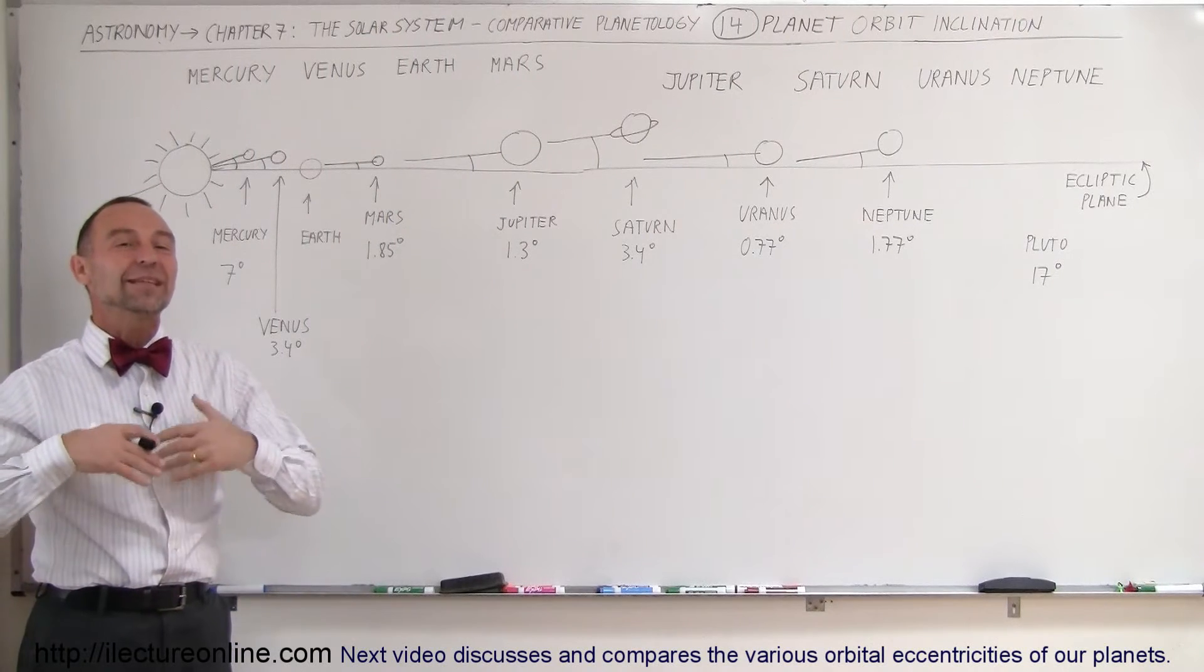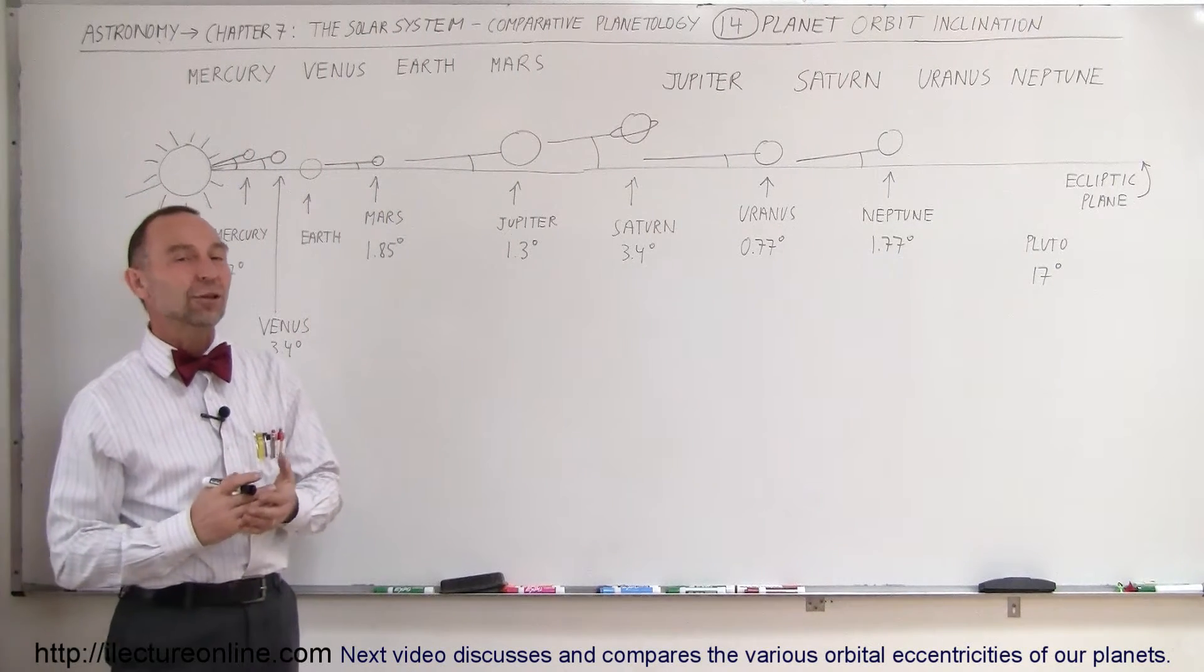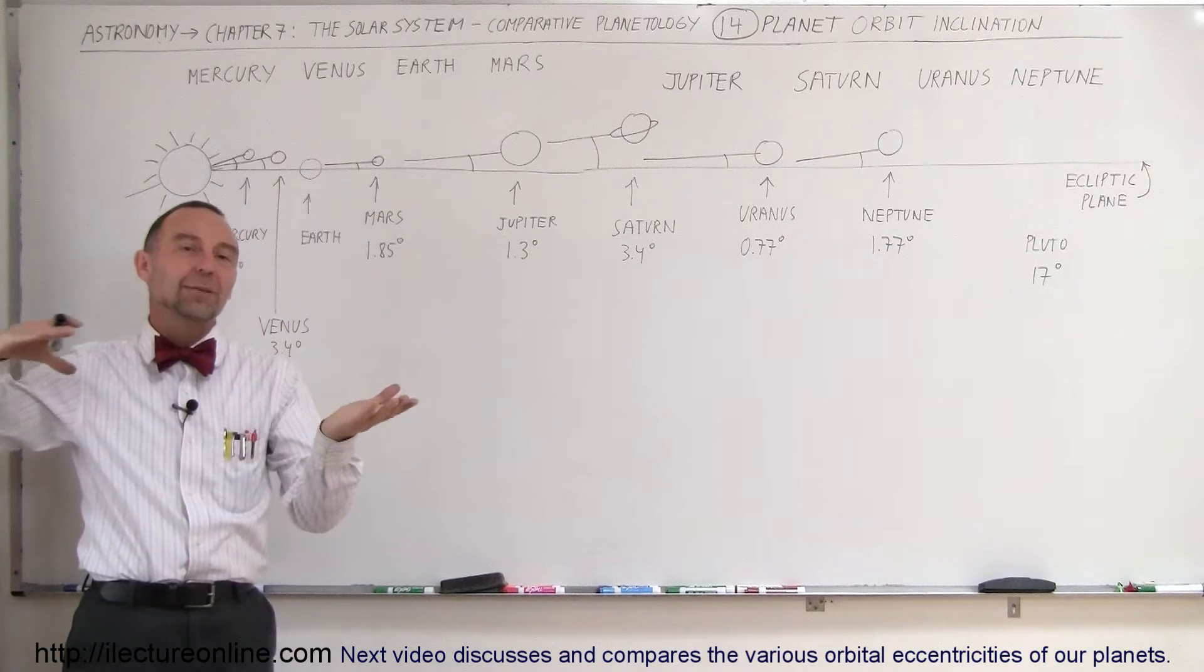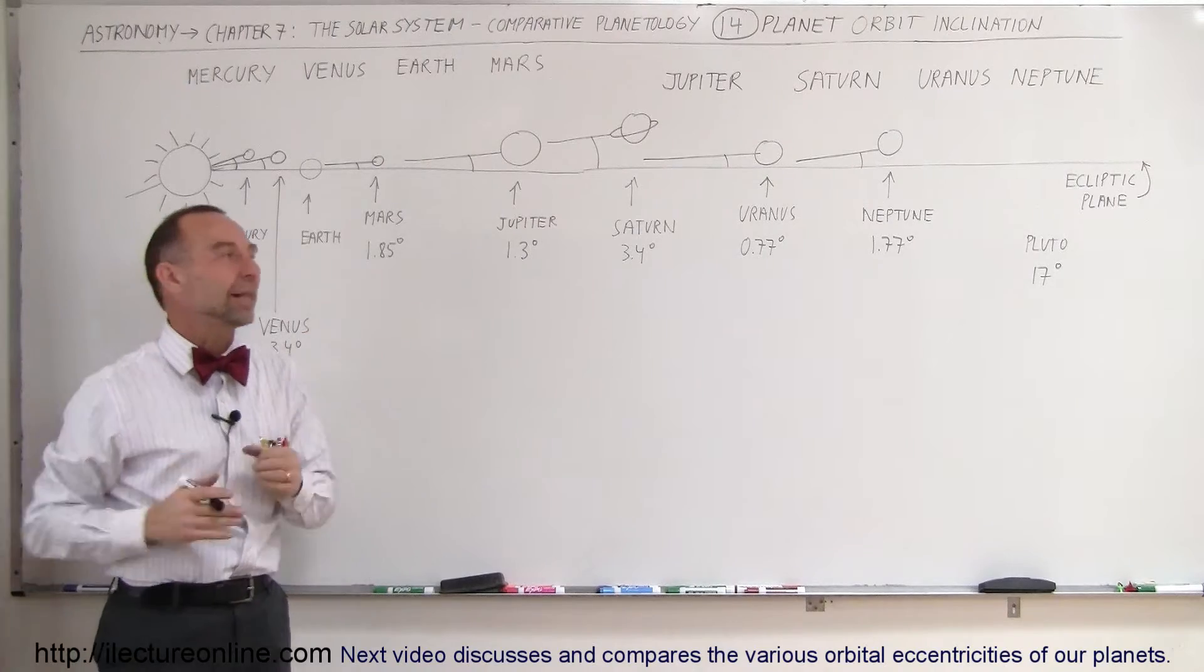Welcome to ElectronLine, and now let's talk about the planet orbit inclination. And what does that mean? Well, the Earth revolves around the Sun and the plane that that orbit makes is called the ecliptic plane.